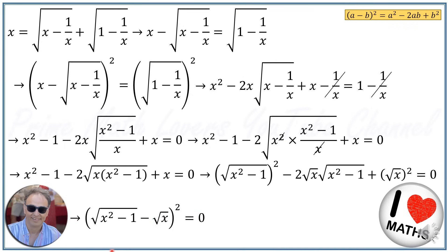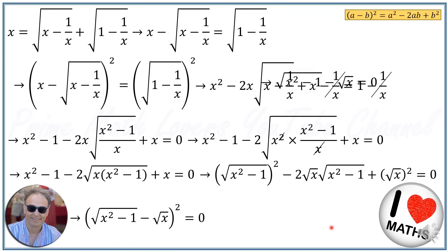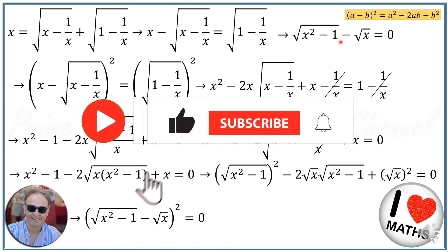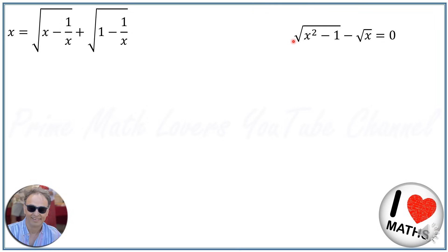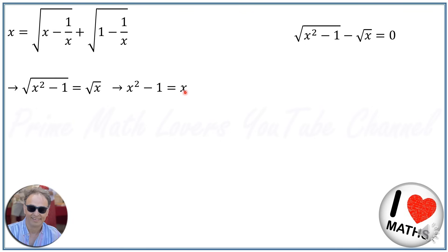We take the square root of both sides and get: square root of (x squared minus 1) minus square root of x is equal to 0. Taking square root of x to the other side gives us square root of (x squared minus 1) equals square root of x. Raising both sides to the power of 2, the square roots cancel and we get x squared minus 1 equals x. Taking x to the other side gives us x squared minus x minus 1 is equal to 0.